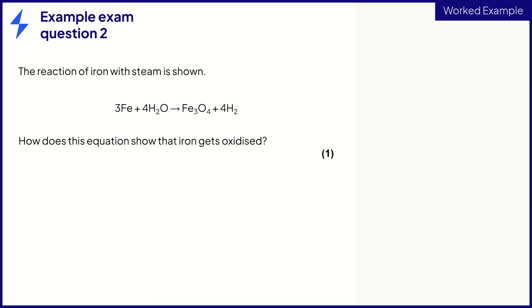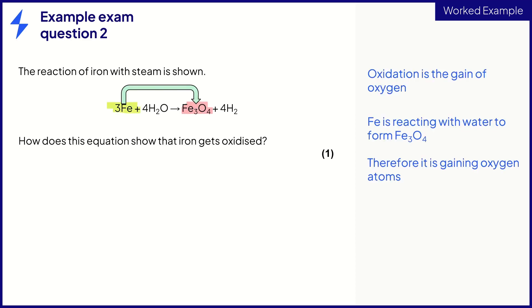This is a similar question, but now asks about oxidation. We know that oxidation is the gain of oxygen, so we can see that Fe has gained oxygen to form iron oxide, Fe3O4.